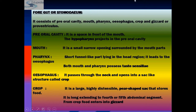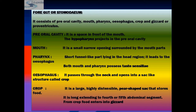The foregut consists of: preoral cavity, mouth, pharynx, esophagus, crop, and gizzard (also known as proventriculus). The preoral cavity is a space in front of the mouth, and the hypopharynx projects into it. The mouth is a small narrow opening surrounded by mouth parts. The pharynx is a short funnel-like part in the head region leading to the esophagus.